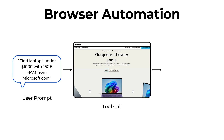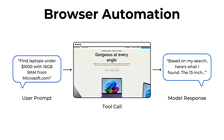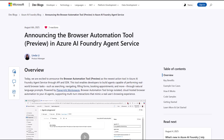After each step, it checks the progress, adjusts if needed, and keeps going until the task is done. Linda Lee's blog post has a demo of using the browser automation tool to fill out a form. However, I'm going to show you how I use it to help me do some online shopping, so let's get into it.